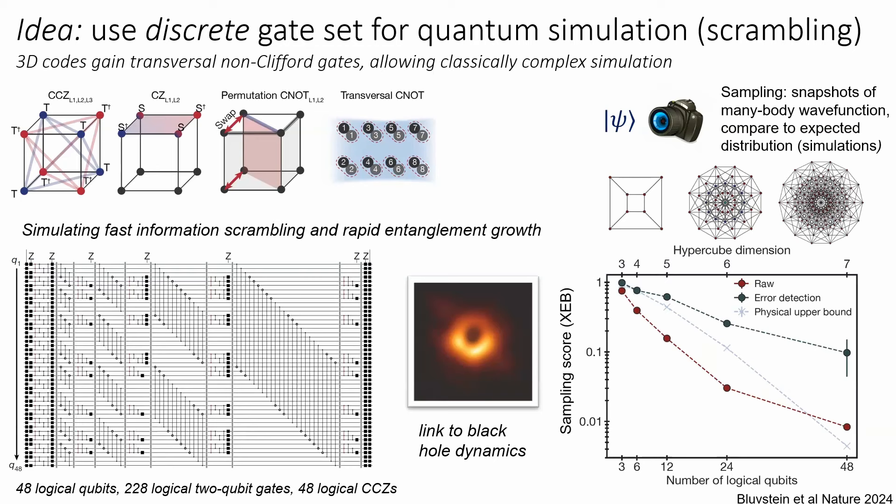The sampling score here tells us about how accurately we can do this fast-scrambling dynamics. We're looking at just 12 logical qubits made out of small 3D error-correcting codes. This plot shows the entire Hilbert space — the 2^12 possible outcomes. We make this wave function, take pictures of it, and compare our experimental distribution with the theoretical distribution. The fidelity isn't perfect, but across this entire Hilbert space, everywhere that there's a theoretical peak, there's a little experimental peak that follows.